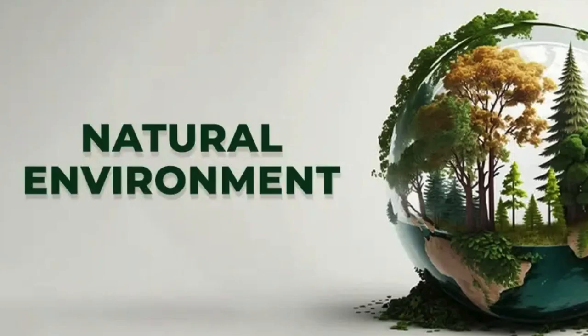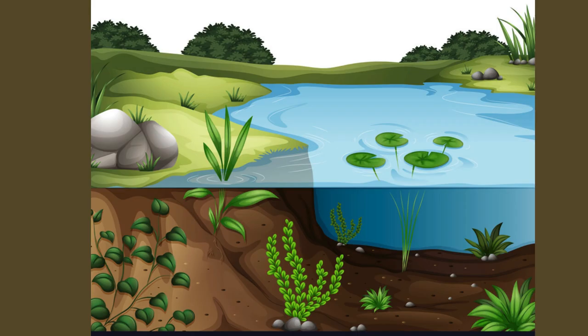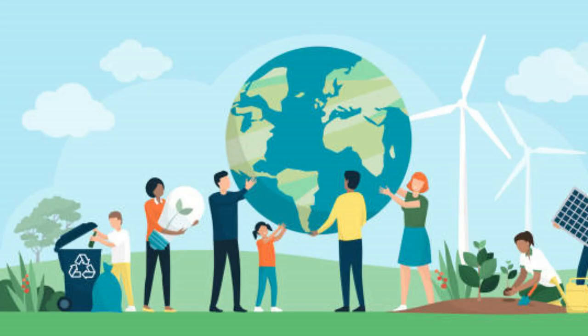Natural environment refers to the physical surroundings of an organism including air, water, land and other living organisms. Social environment describes the cultural and societal surroundings that influence individuals or communities.